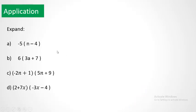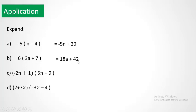Application. First, we multiply the exterior terms by every term inside. Minus 5 times n is minus 5n, and minus times minus is plus, so 5 times 4 is 20. Then 6 times 3a is 18a, and 6 times plus 7 is plus 42.